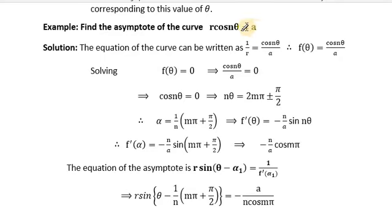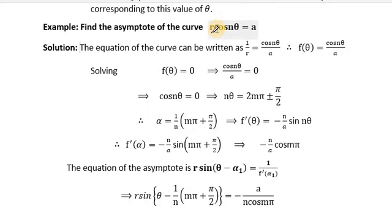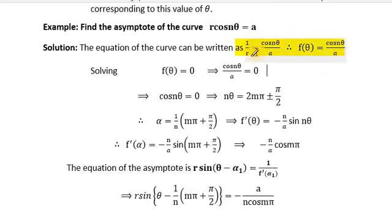According to our first step, we have to write this in the 1/r form. Transferring cos(nθ) to the other side, we get 1/r = cos(nθ)/a. Therefore, f(θ) = cos(nθ)/a.